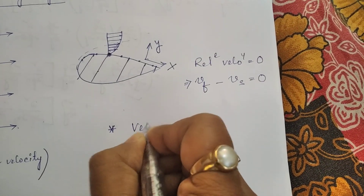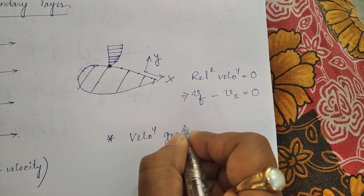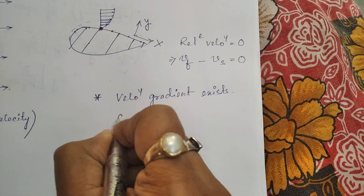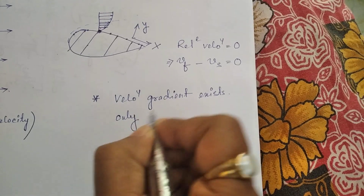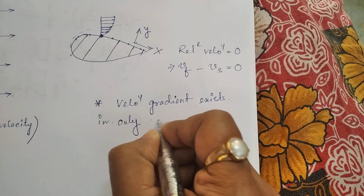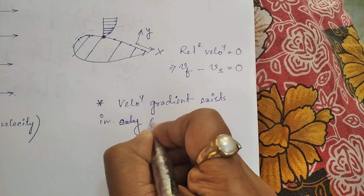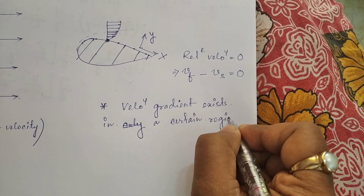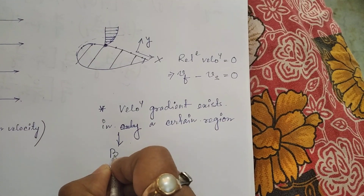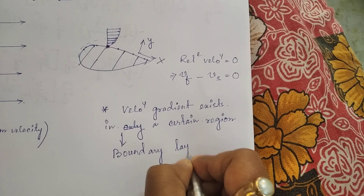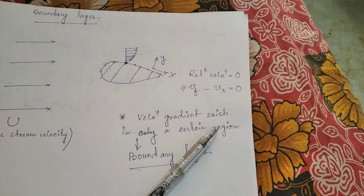What we have seen is that there is a velocity gradient — a change of velocity along the y direction — that exists only in a certain region. This region is called the boundary layer.